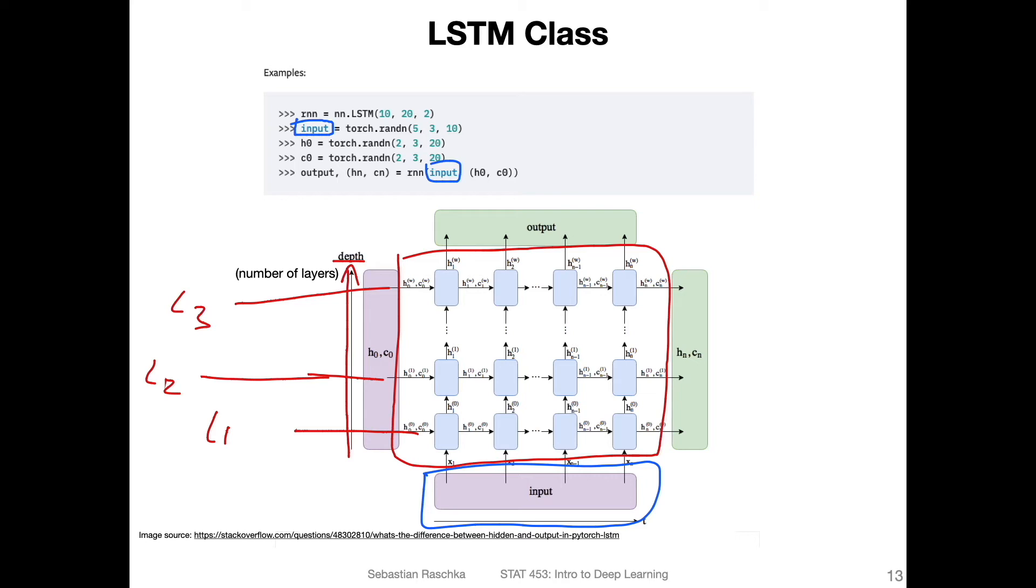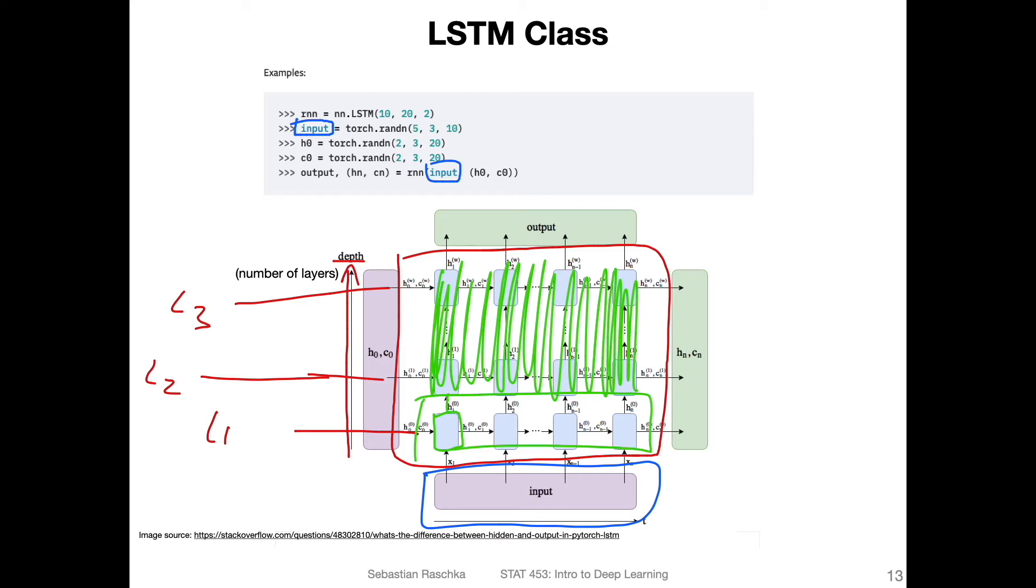So previously, in the code examples, we only used one layer. But of course we can have multiple layers. You can see that it's just one layer on top of each other, right? So previously we only had in the actual code example, in the lecture, we only had this one hidden layer. But we also talked about that we can have an arbitrary number of hidden layers, similar to how we can have an arbitrary number of layers in a convolutional network or in multi-layer perceptron.